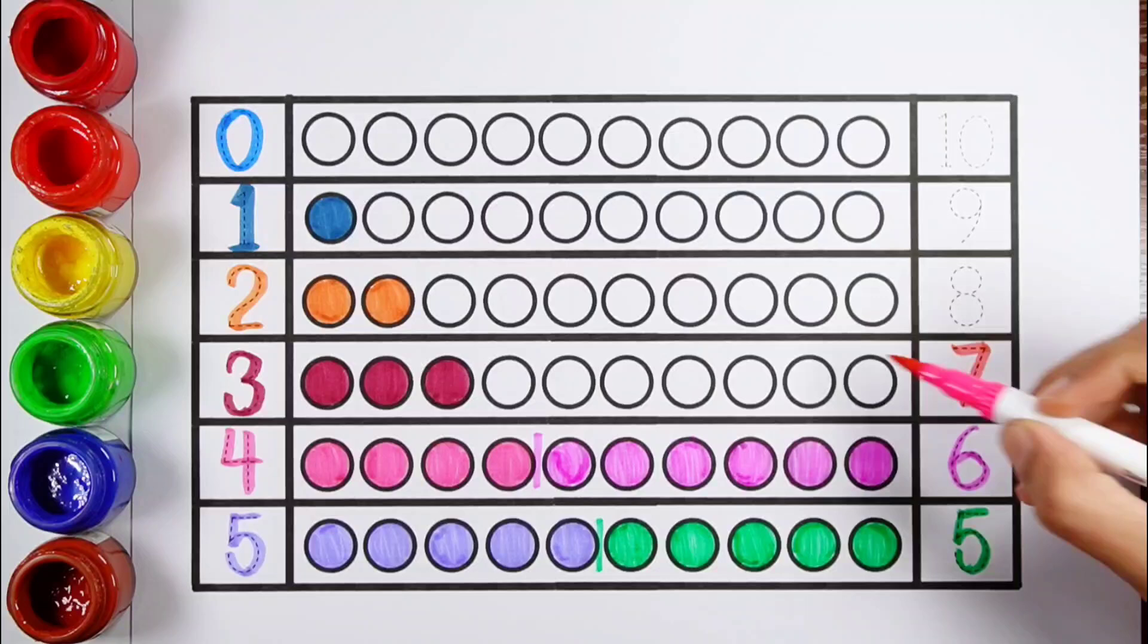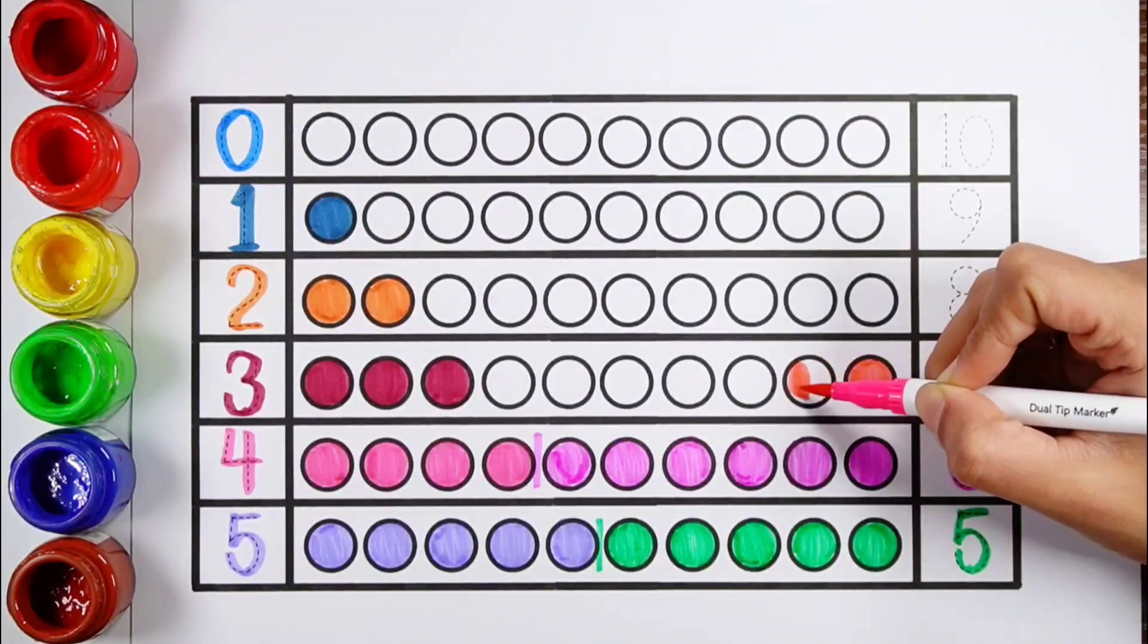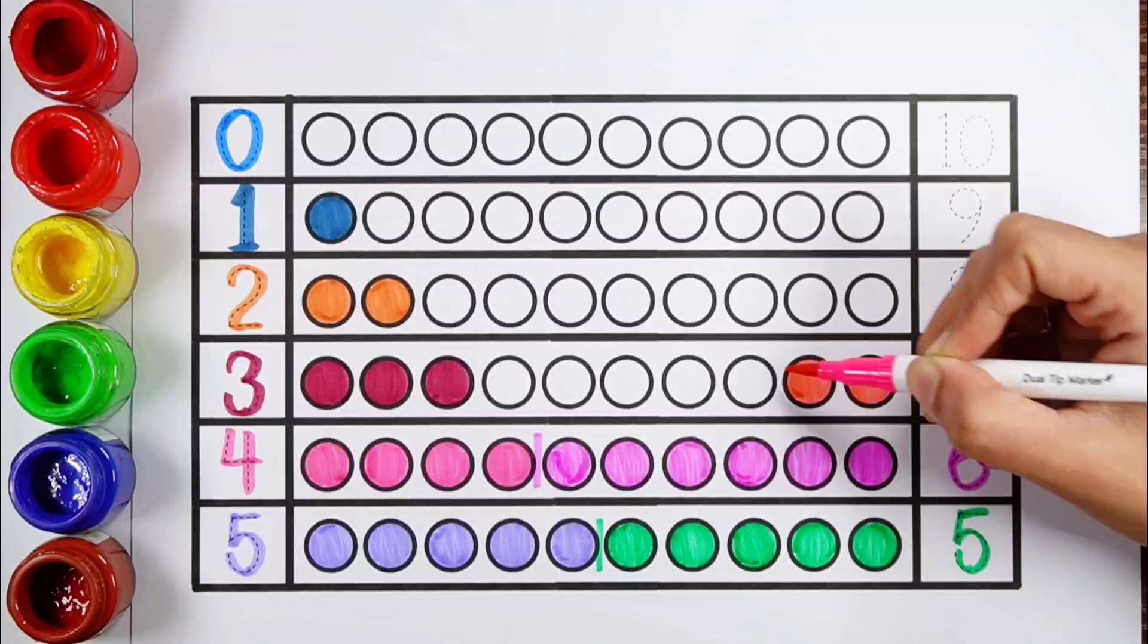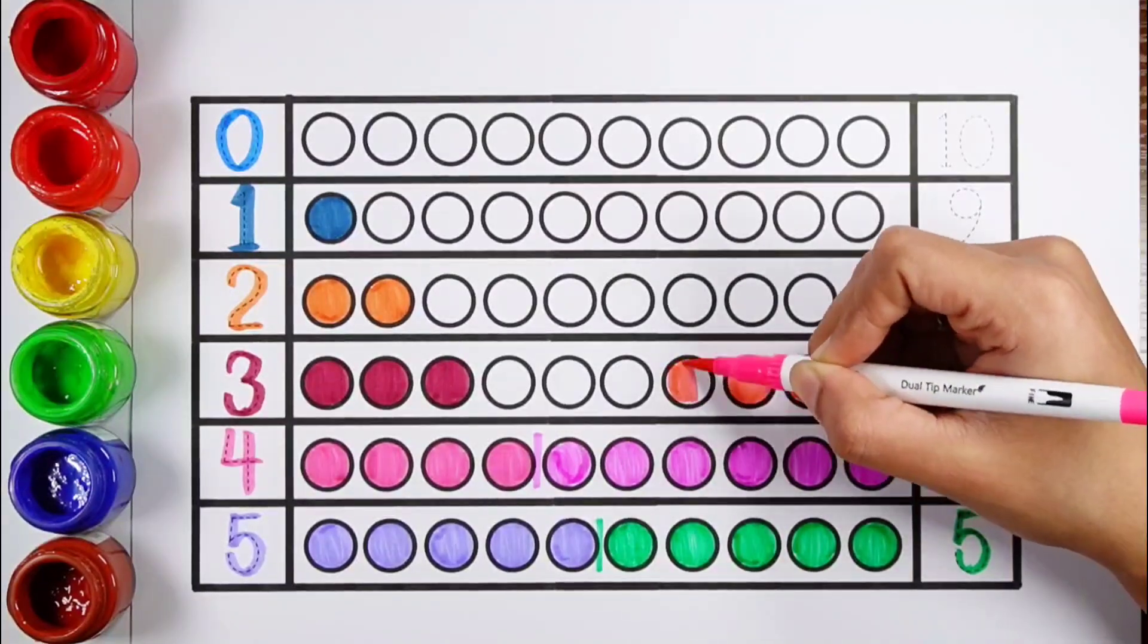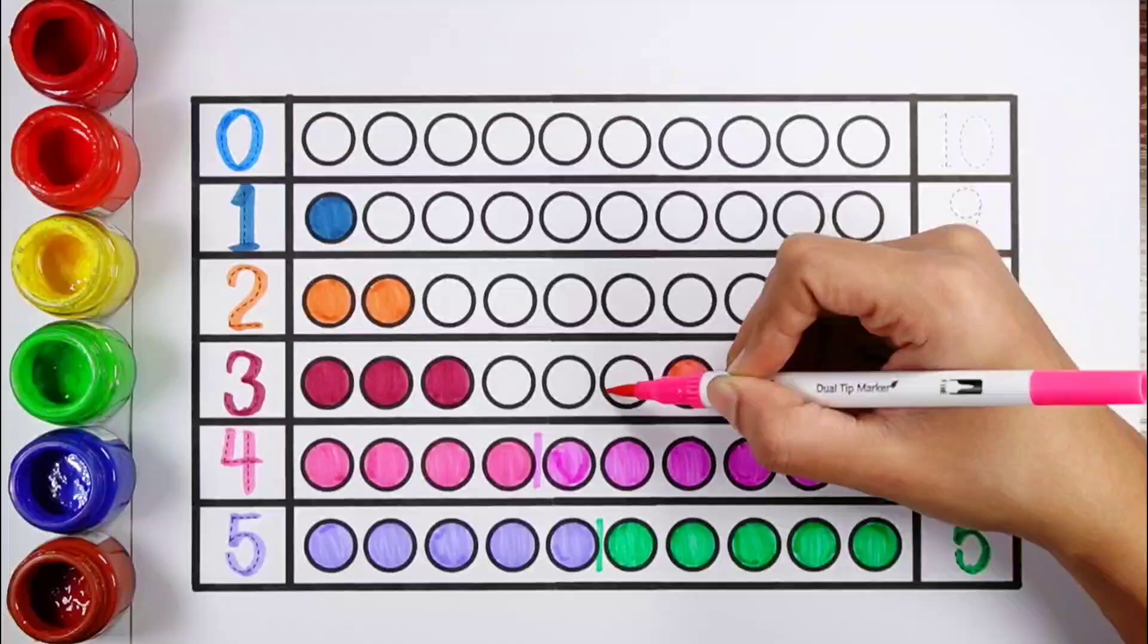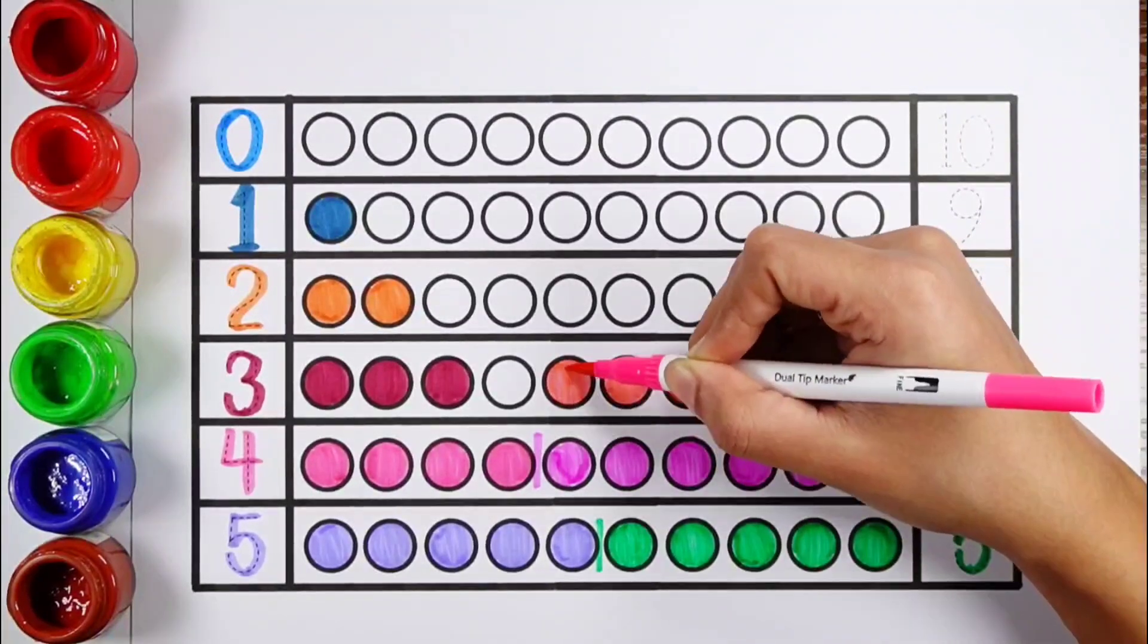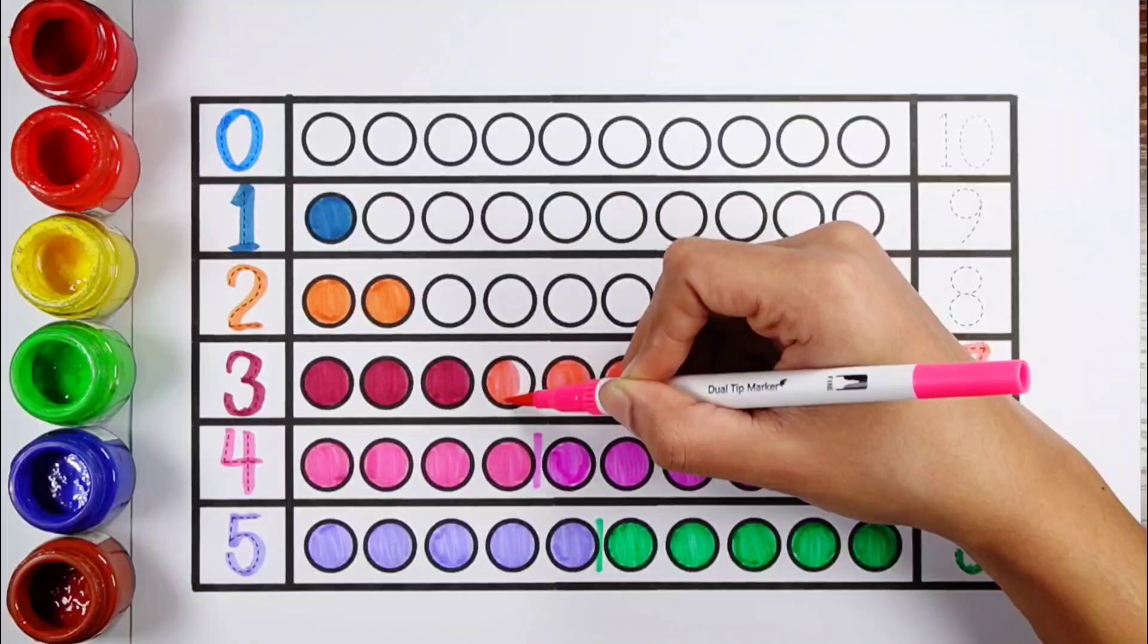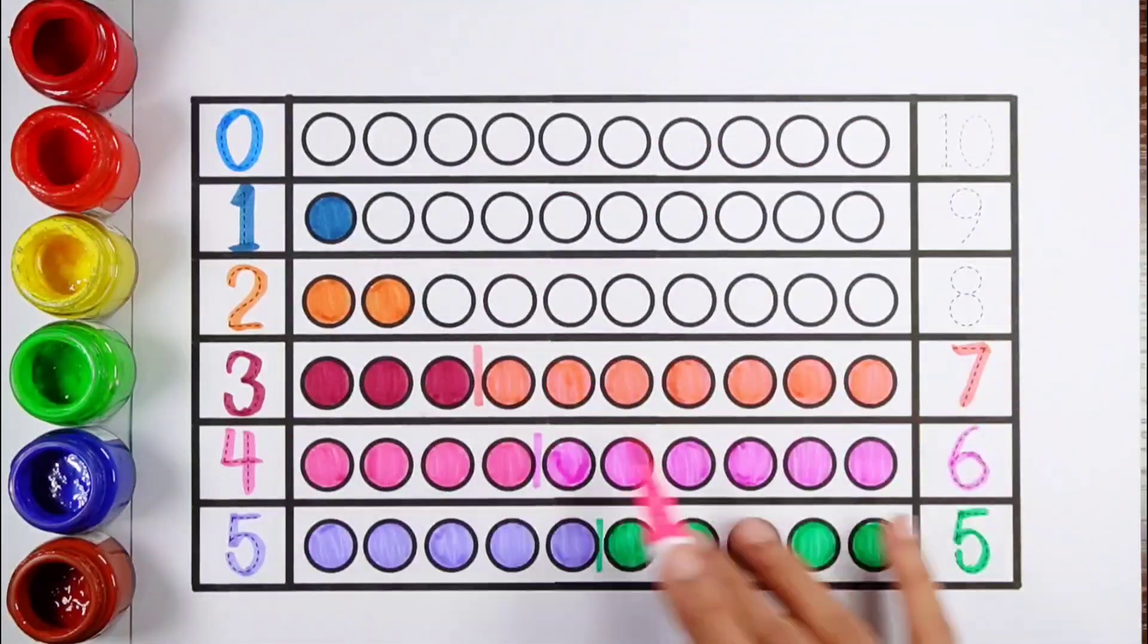Number 7. 1, 2, 3, 4, 5, 6, 7. 7 balls. 3 plus 7 makes 10.